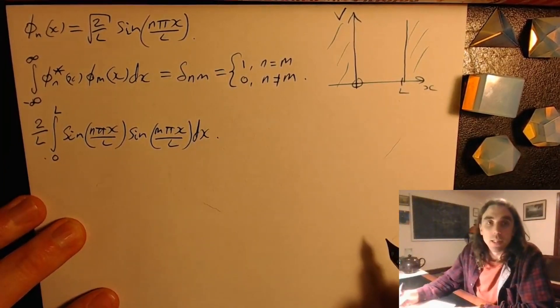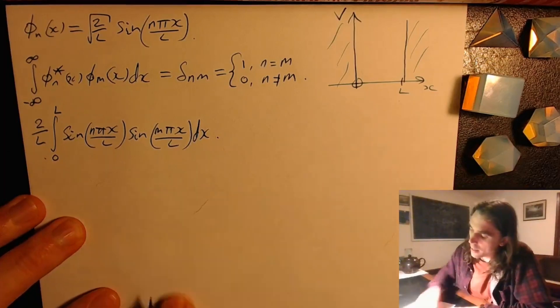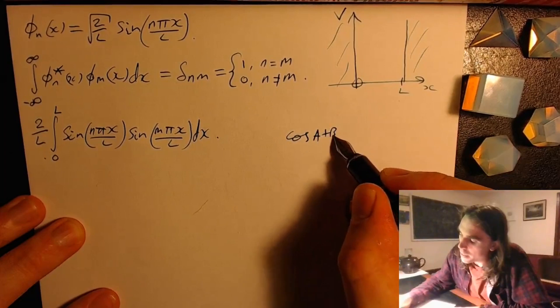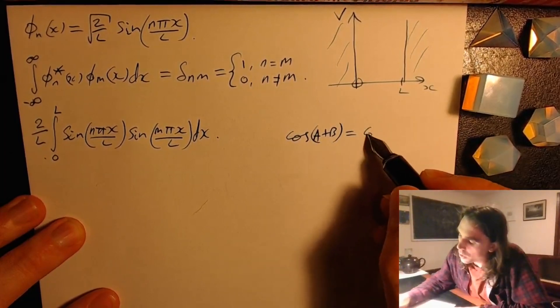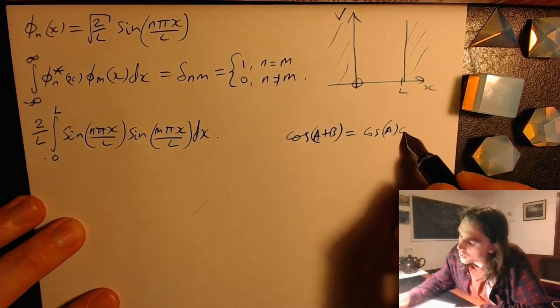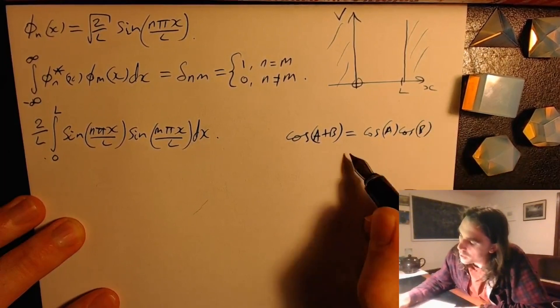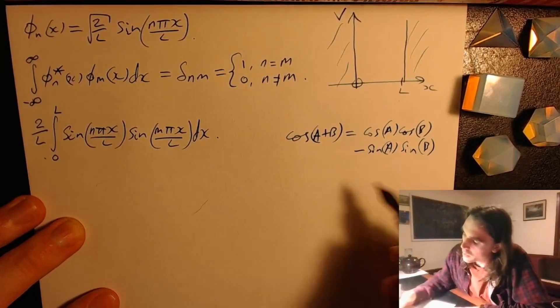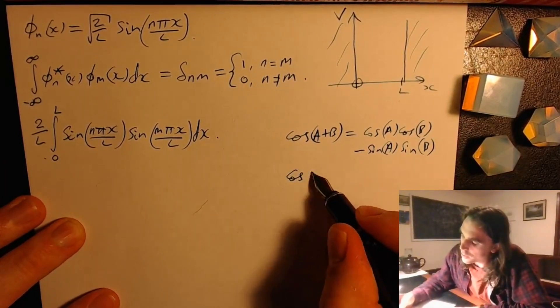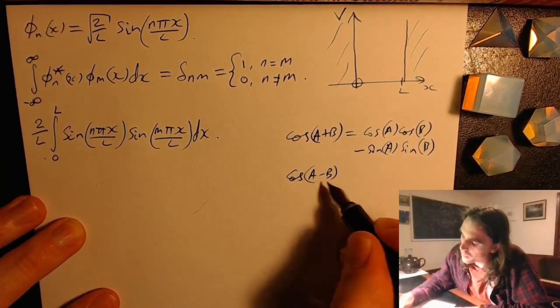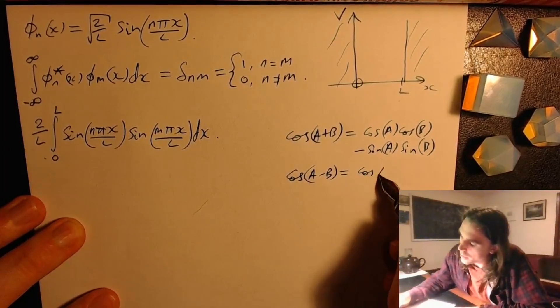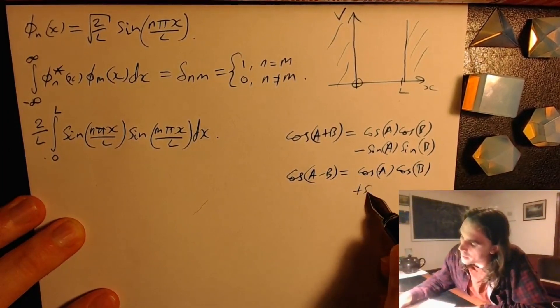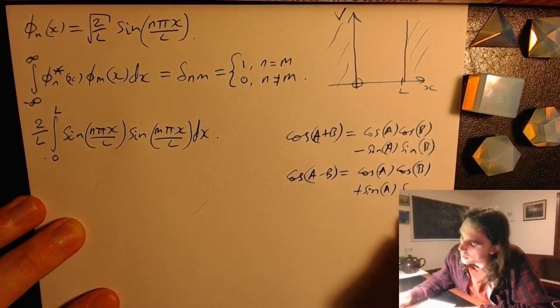Okay, we're going to need to use another trigonometric identity. This time we need to use that cos of a plus b equals cos a cos b minus sin a sin b. And therefore cos of a minus b equals cos a cos b plus sin a sin b.